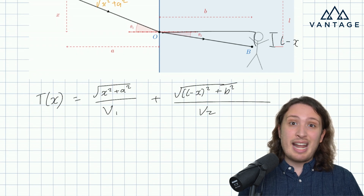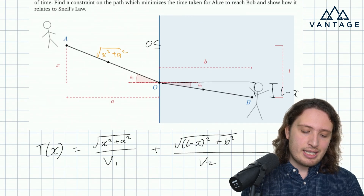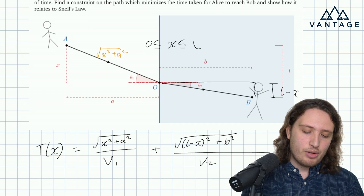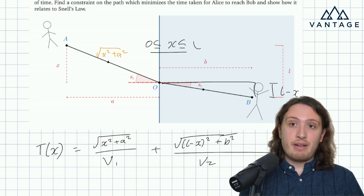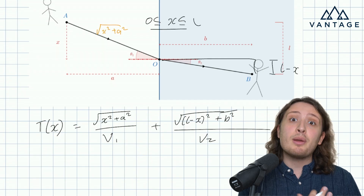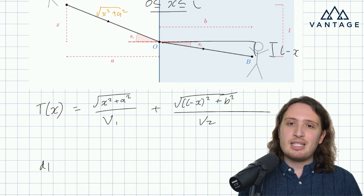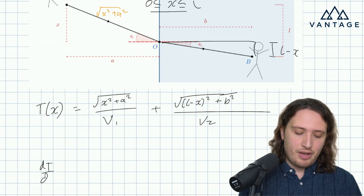Sometimes the minimum can be at the end of the domain. Clearly we need x to be somewhere between zero and l — any other x wouldn't make sense; there's no reason to go up, nor is there any reason to overshoot. So in theory, it's possible that the end of the domain could do better than a turning point. We will need to address that to handle the question properly. But let's start by looking at the first derivative.